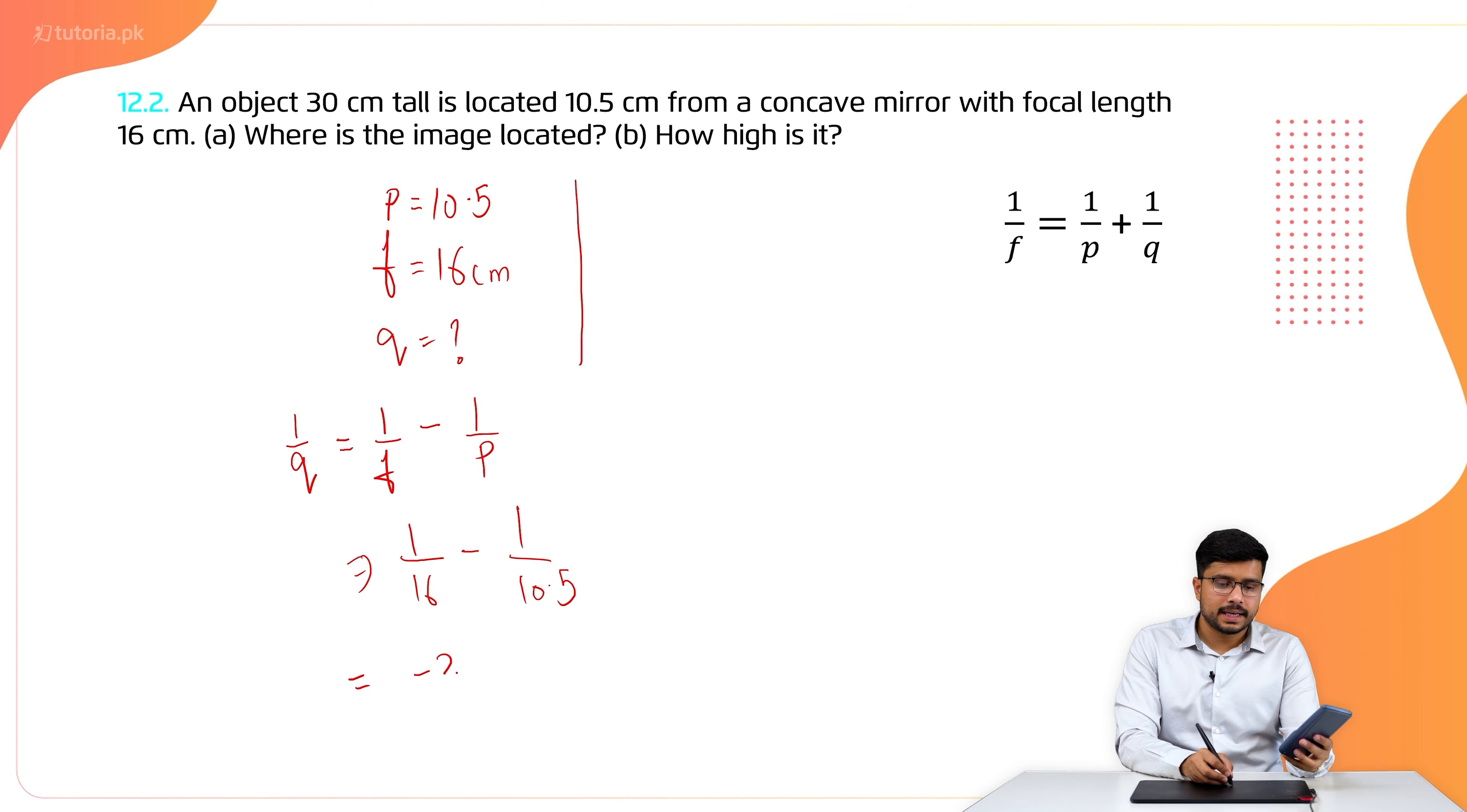This formula is the magnification. The magnification is equal to I over O. I over O is equal to Q over P. This is very important.